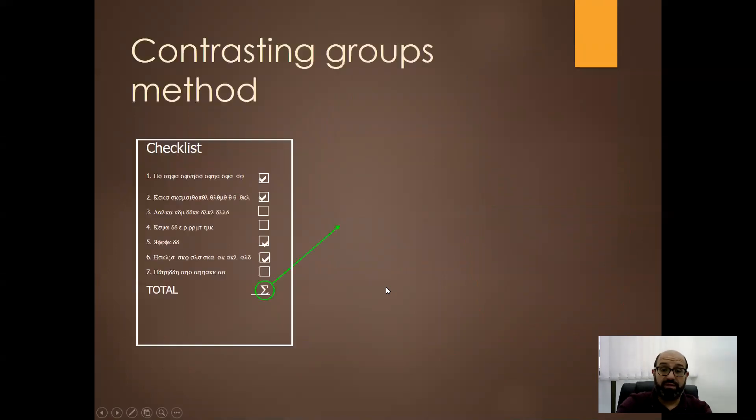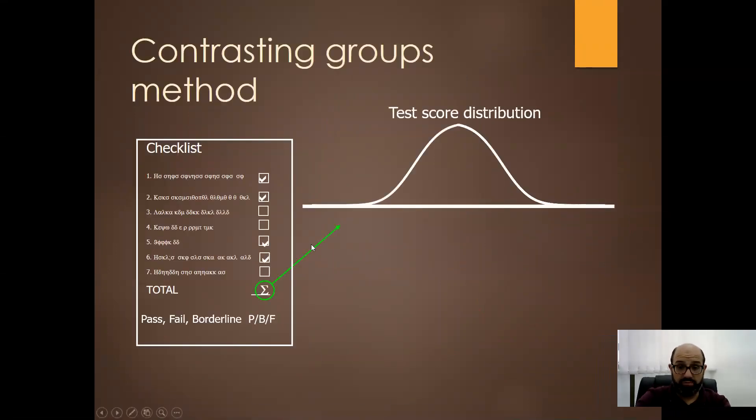So what about the contrasting group? We have the test score distribution based on the total marks that students get. And then we draw two different curves.